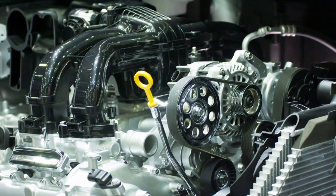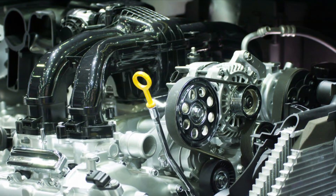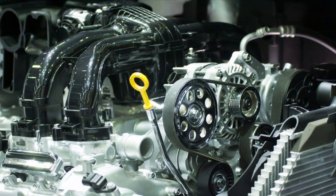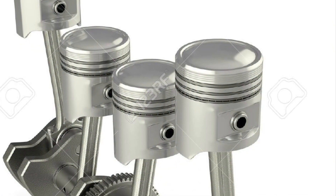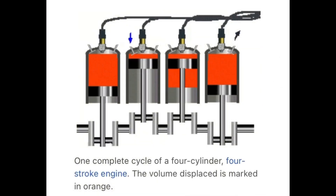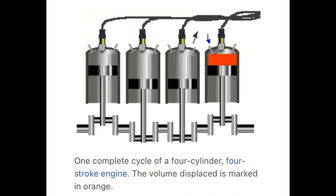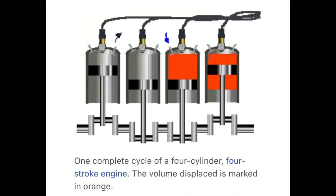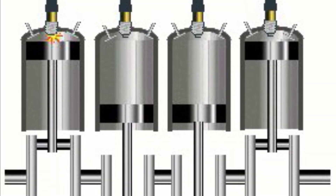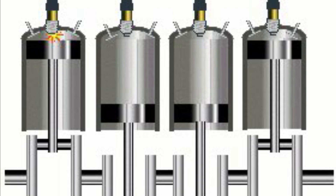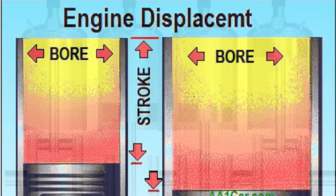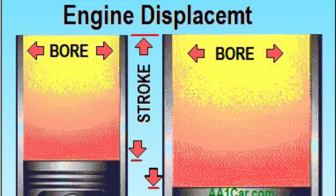Simply put, engine displacement is the combined volume of air and fuel resulting from the up and down movement of pistons in the cylinder. This up and down movement is when the piston moves to its highest point, called the top dead center, and moves back down to the lowest point, called the bottom dead center, and up and down again.